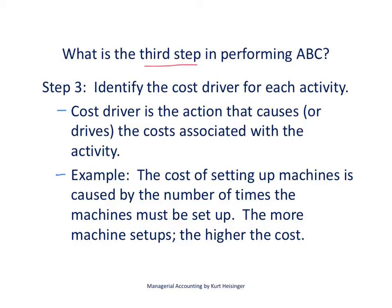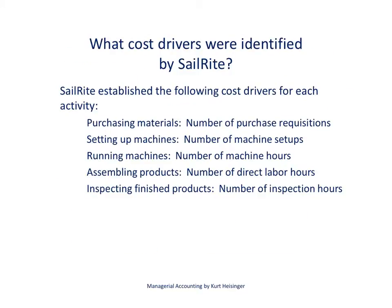The third step is to identify what drives the costs associated with each activity. For example, the cost of setting up machines is caused by the number of times machines have to be set up for production — the more machine setups, the higher the cost. For Sailrite, the cost driver for purchasing materials is the number of purchase requisitions issued, and the number of machine setups drives the costs for setting up machines, with similar drivers identified for the remaining three activities.